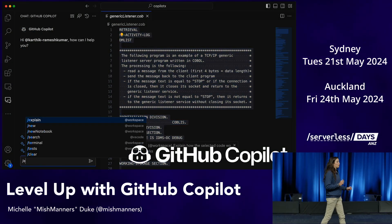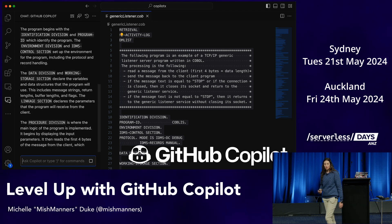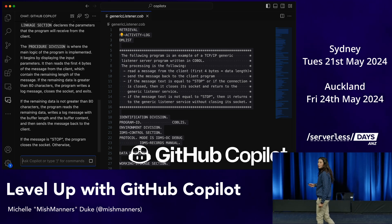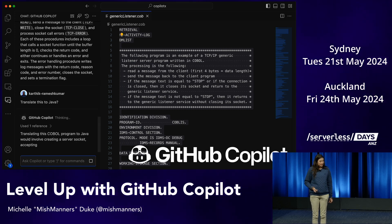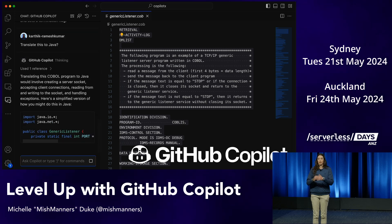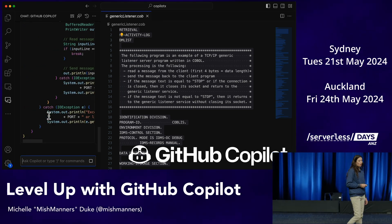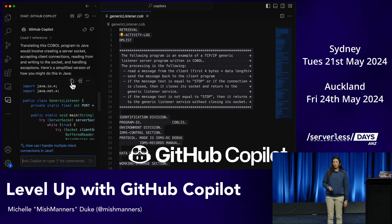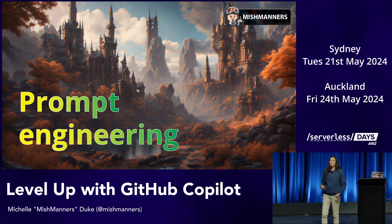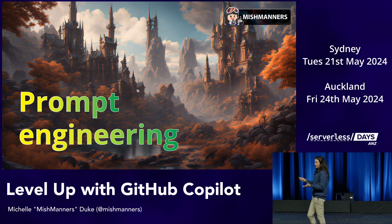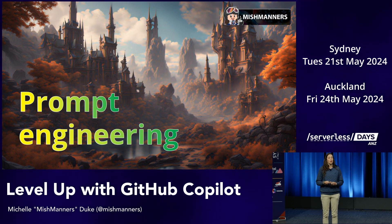We can also use GitHub Copilot to translate language. Here's some COBOL code — we first get it to explain what it's doing so we have an understanding. Not many people are using COBOL anymore, so we want to translate it into Java. We ask GitHub Copilot, it has a quick think, and says 'to translate this it would involve doing these things — here's the code.' It starts synthesizing the lines of code. If we like it, we can highlight it, insert it into a new Java file, and save it.